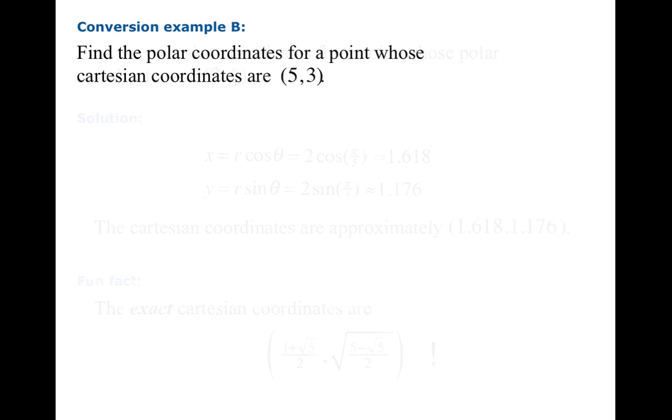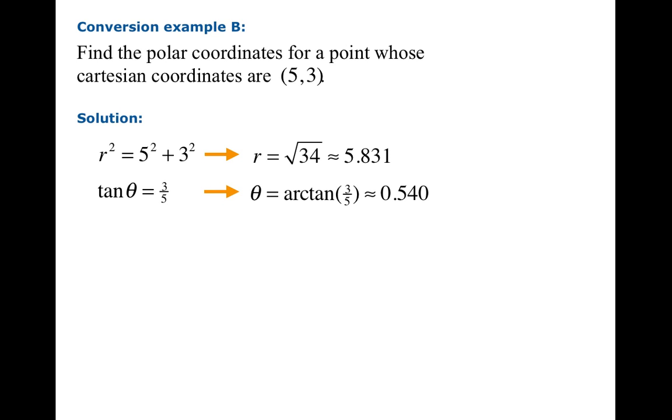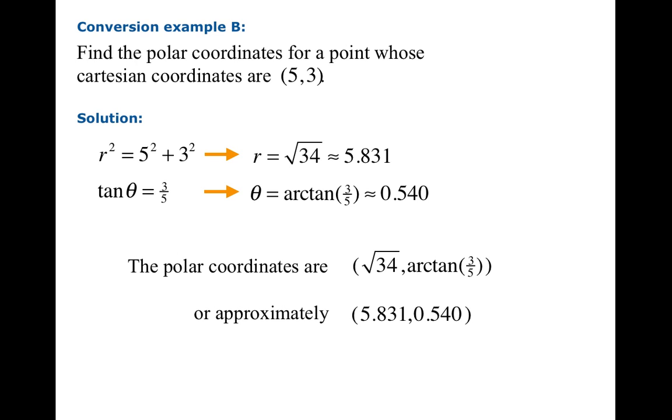But let's try one going the other direction. So find the polar coordinates for a point whose Cartesian coordinates are (5,3). So what does the solution look like here? We know r² is going to be the sum of the squares of 5 and 3, and we know tan θ is going to be 3/5. Now we can just solve for these quite directly. Basically r equals √34, which is about 5.831. And theta is the arctangent of 3/5, which is about 0.54. And so there are the polar coordinates.